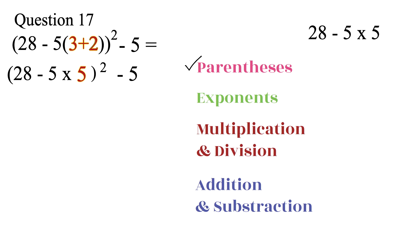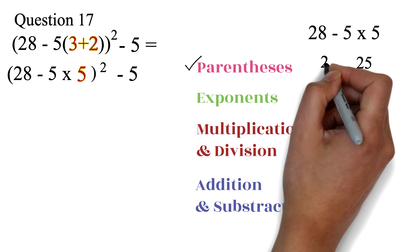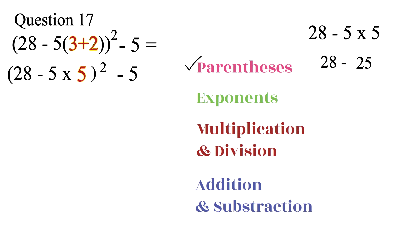We will use the order of operation to work that out. We know we have to do multiplication before subtraction. So, we have 5 times 5, which is 25. Then, we have 28 minus 25, which is 3.